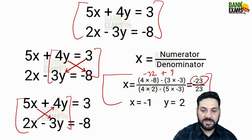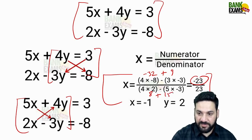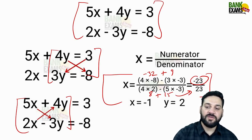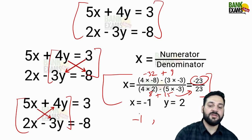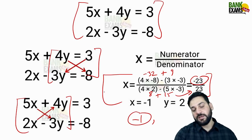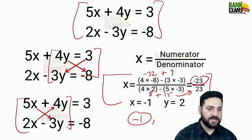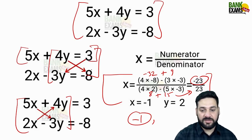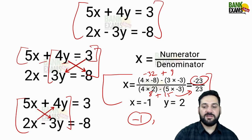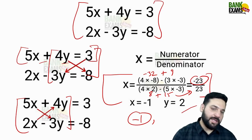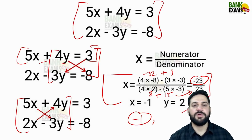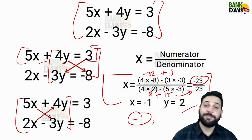So it is -32 + 9, which gives -23. The denominator is 8 + 15, which is 23. So the value of x is -1. For y, just substitute x = -1 into either equation and you can easily find y = 2. Very simple method — I'll do 4 more questions so you can practice.